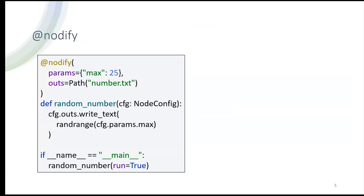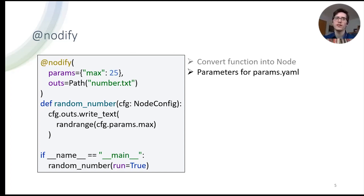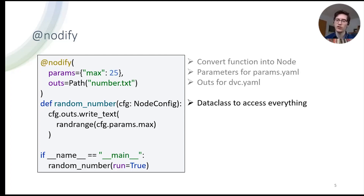Let's take a look at a quick example. This is a very simple node on our computational graph, which just computes a random number and writes it into a file. We use the `@notify` decorator from the Zynctrack package to convert this function into a node on our computational graph. We pass in some parameters that will be stored in the params YAML files — in this case, a `max` parameter for the random number between zero and the maximum. We define an output, in this case just a text file `number.txt`. The actual core of that function takes a single argument: the node config object, which is a data class object that gives you access to the outs, params, and all other DVC options like plots, metrics, no-cache, and so on.